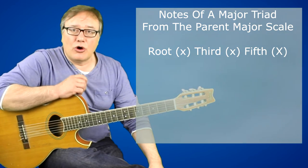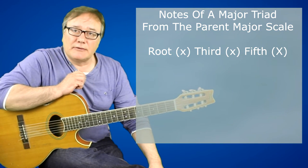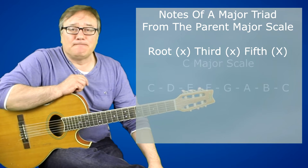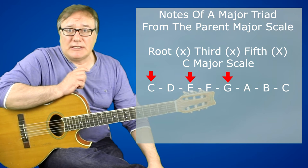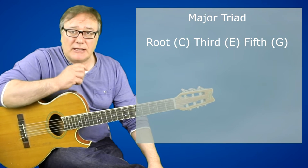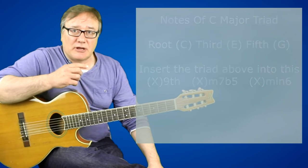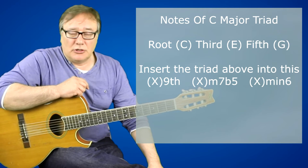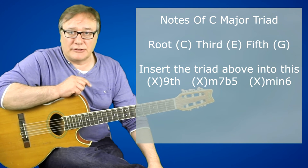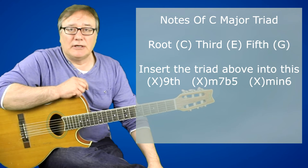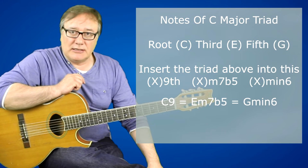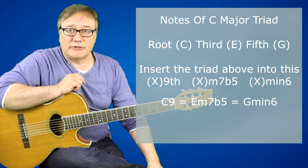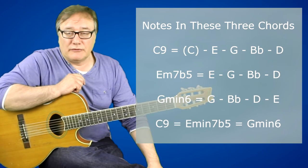I want to show you a simple way of understanding how chords equal each other. So you can see over there a triad — root, third, fifth — a major triad. What we're going to do is take those and put in a C major triad. So what you now have is C, E, and G. The way this works is you can put any triad in there and the values you now see are always good. Under the root you've got the ninth, under the third you've got the minor seven flat five, and under the fifth you've got the minor six. So if we put some values in there, we've got C9 equals E minor seven flat five equals G minor six. They all have the same notes, as hopefully you can now see.